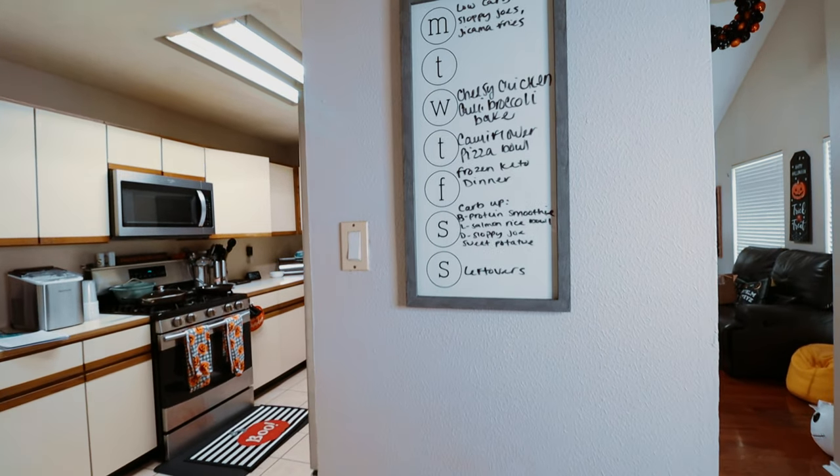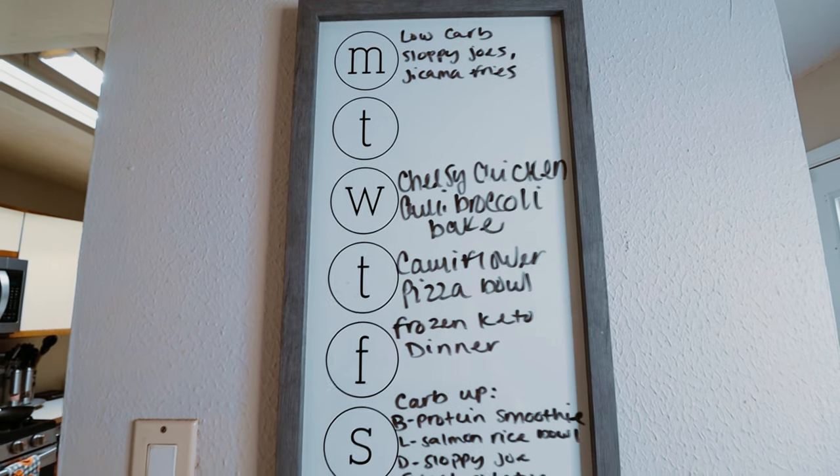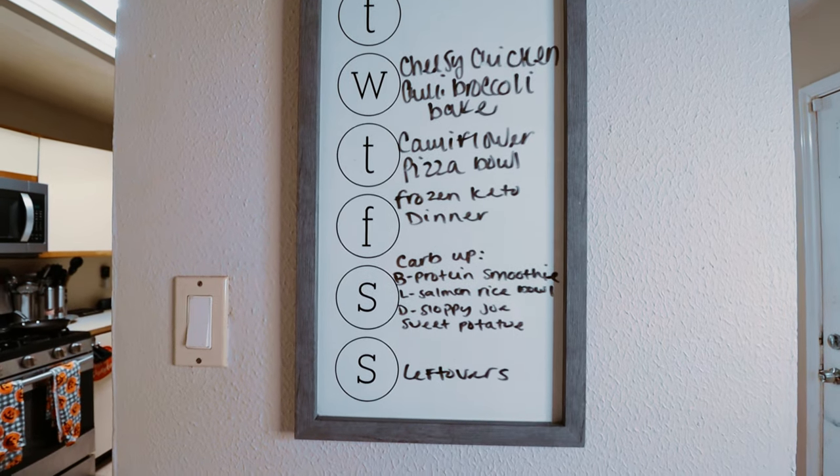Tip number nine is to keep your meal plan in eyesight. If you've been following me for a long time, usually when I do my grocery hauls I'll show you my weekly meal plan. I have a board that I keep right on my wall before I walk into the kitchen every morning. As soon as I wake up, I go to my meal planning board and see what meals I'm going to be having for the day. This helps me take out any meat that needs to be defrosted or do any little prepping ahead of time — maybe I need to marinate something. It just helps to keep a visual eye on your meal plan for the week.